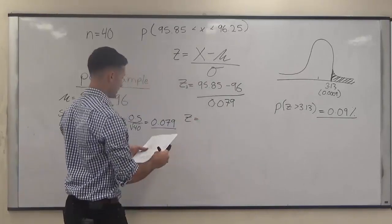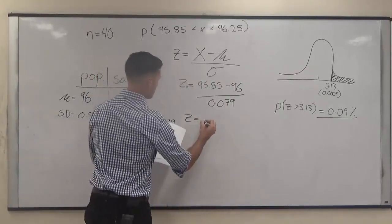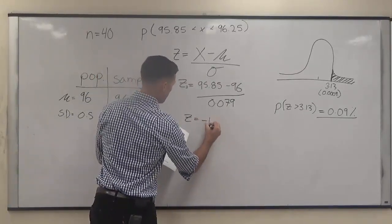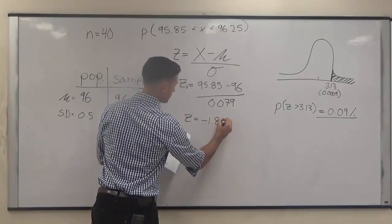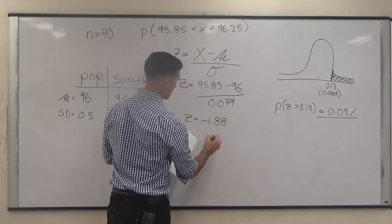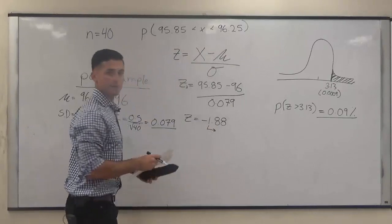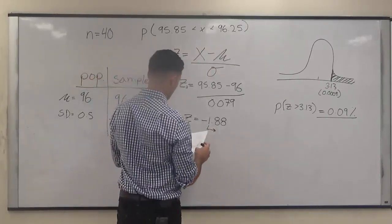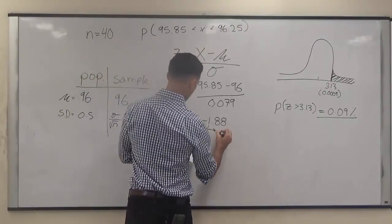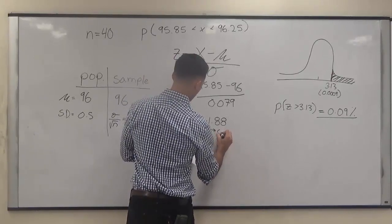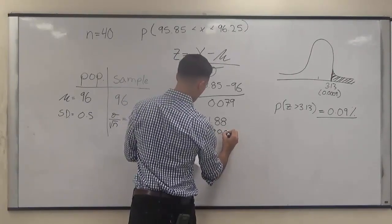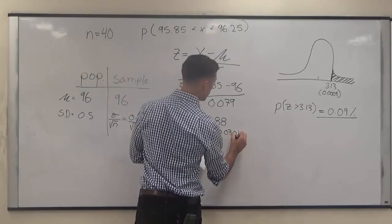So that ends up coming out to negative 1.88 for our z-score. And on our negative z-score table, that corresponds to a table score of 0.0301.